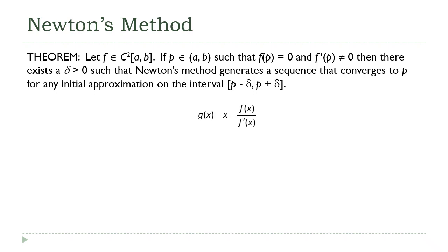So this is the theorem that I actually want to prove here. We're going to start by assuming that f is a C^2 function, that f, its derivative and its second derivative are all continuous. I'm going to say if p is a number on that interval such that f(p) equals zero. In other words, if a solution to the equation exists and the derivative is not equal to zero at that point, then there exists this delta greater than zero such that Newton's method works. It generates a sequence that converges to p for any initial approximation on that interval [p - δ, p + δ].